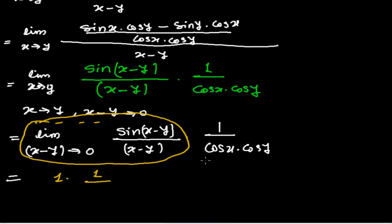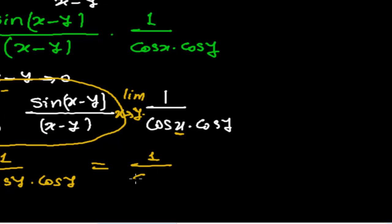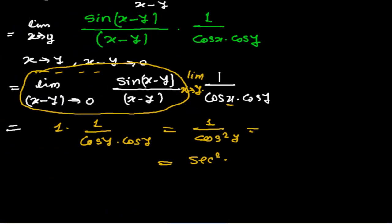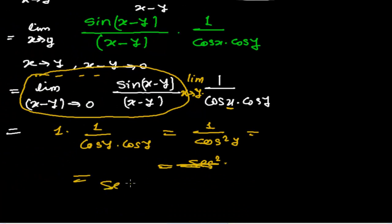For the remaining part, the limit is still when x tends to y. According to the angle, we change the limit accordingly. So when x tends to y, we plug in x = y, giving us 1 upon cos y times cos y, which equals 1 upon cos²y. That equals sec²y.